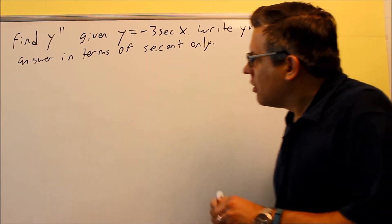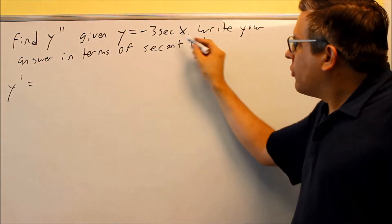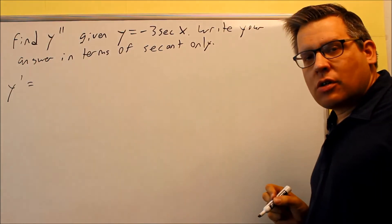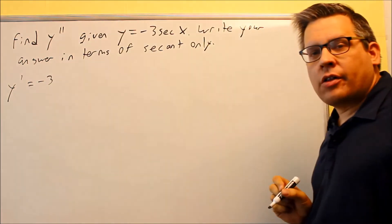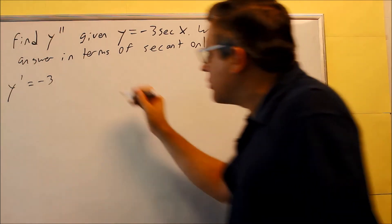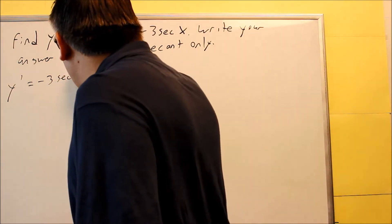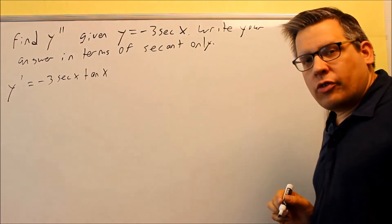So the first thing I want to find is y primed. The derivative of negative 3 secant x. I'm going to do negative 3, and then multiply it by the derivative of secant x, which we talked about in an earlier video. That's secant x tangent x. And that's it. That's going to be our first derivative.